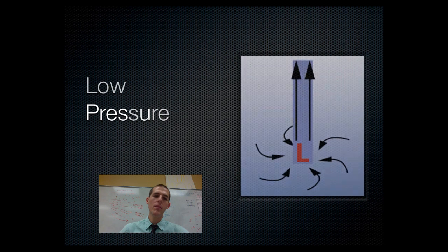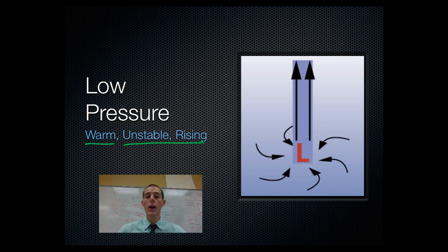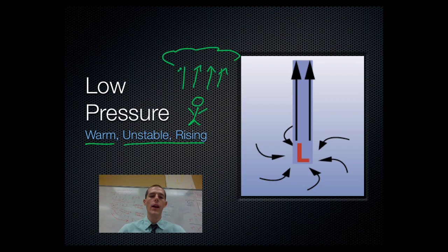The opposite is a low pressure system, and it is opposite in all ways. A low pressure system is usually warm air. Because it is warm, it is unstable, which means it's going to rise. A low pressure system generally occurs around the equator or the Gulf of Mexico — warm air rising up away from the ground and up towards the atmosphere. Because it is rising up, it is taking pressure off of anything that's below it. So high pressure is cold, sinking down and pressing; low pressure is warm, rising up and pulling pressure off.